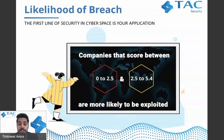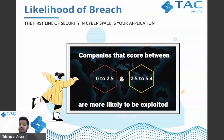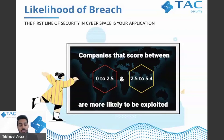Companies with a score between 0 and 5.4 are more likely to be breached. Before you know your score, you need to use ESOF and scan your applications. We have a free trial on our website — you can go there, run a free trial, scan your application for free, and know your scores. That's a free add-on that Tax Security provides.